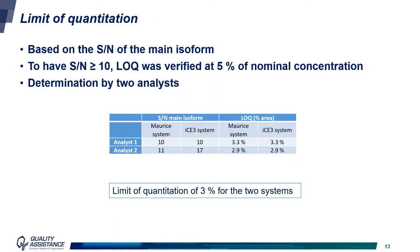The other main parameter evaluated was the limit of quantitation. This determination was based on the signal-to-noise ratio of the main isoform. To have a signal-to-noise ratio above 10, LOQ was verified at 5% of the nominal concentration, which is 0.015 mg/mL. This was checked on independent runs on both systems by two analysts, and in all cases, a limit of quantitation of 3% was found, indicating equivalent LOQ for both systems.